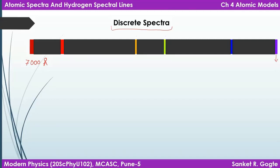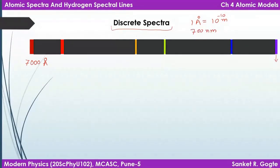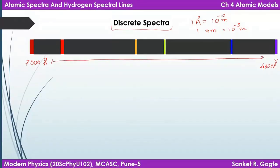Since this light has only certain wavelengths, much of the film remains black. If all wavelengths were present — a continuous spectrum — it would look like a rainbow with no black patches. For visible light, which our eyes can detect, the wavelength range is roughly 7000 Å (700 nm) on the red end down to about 4000 Å (400 nm) on the violet end, where 1 Å = 10⁻¹⁰ m and 1 nm = 10⁻⁹ m.